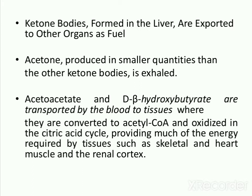Acetoacetate and d-beta-hydroxybutyrate are transported by the blood to extra-hepatic tissues, where they are converted into acetyl-CoA and oxidized in the citric acid cycle, providing much of the energy required by tissues such as skeletal muscles, heart muscle, and the renal cortex.